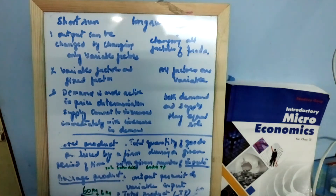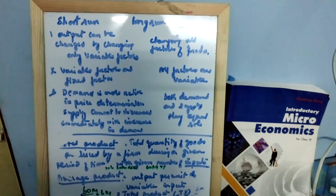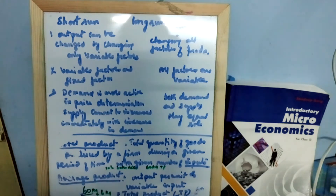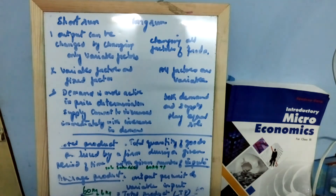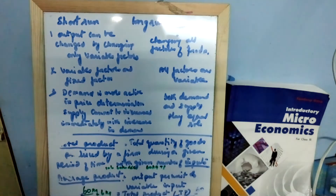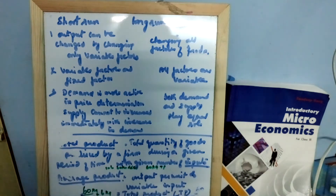Hello. Now let's discuss short run and long run. Production takes place in short period as well as in long period of time. Short run refers to a period in which output can be changed by changing only variable factors.